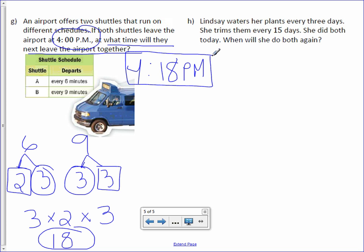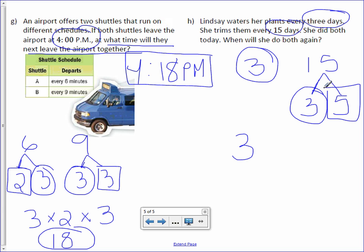Letter H, Lindsay waters her plants every 3 days. She trims them every 15 days. She did both today. When will she do both again? So we've got watering the plants every 3 days, and trimming the plants every 15 days. 3 is a prime number. 15, however, can be broken down into 3 times 5. There's a 3 in common, with 5 left over.